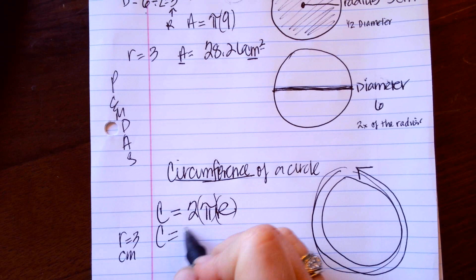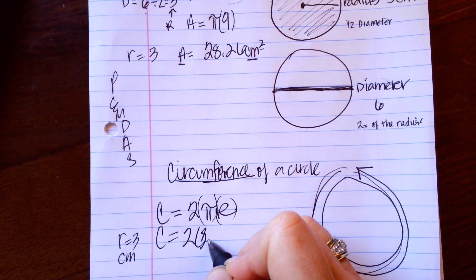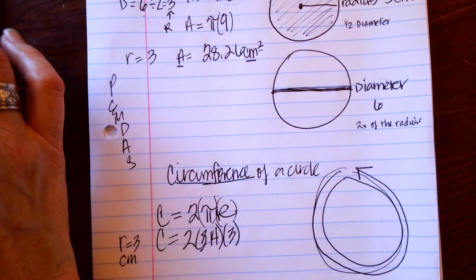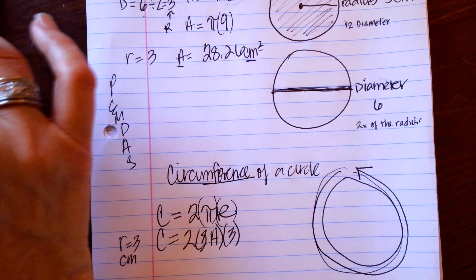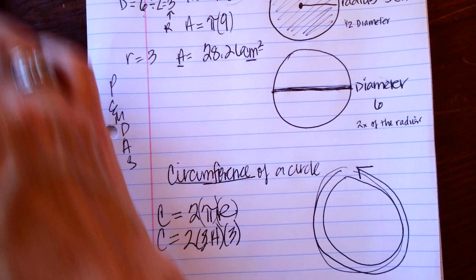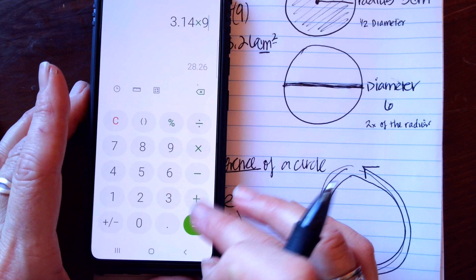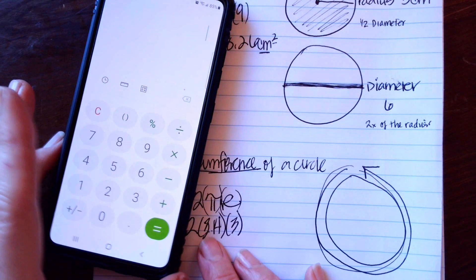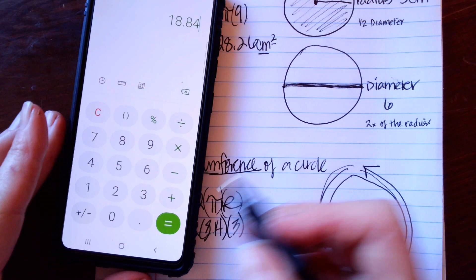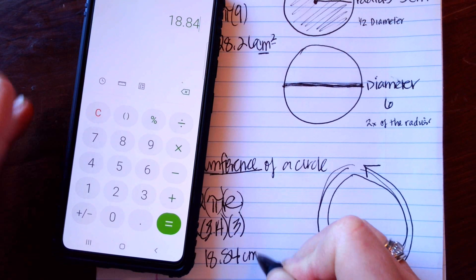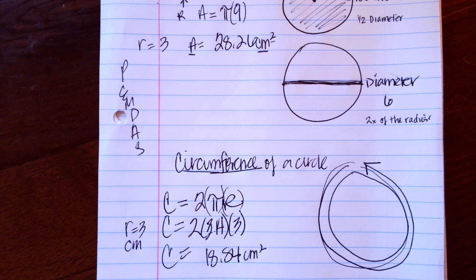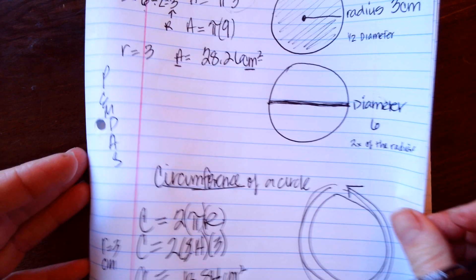So C equals 2 times 3.14 times the radius. If our radius is three centimeters, we do two times 3.14 times three, which gives us 18.84 centimeters. That's how you find the circumference.